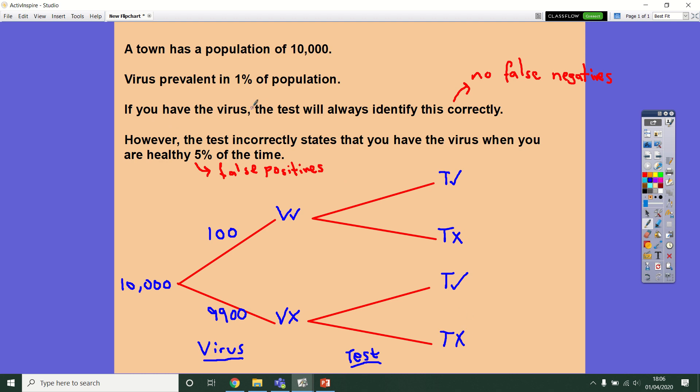So if you have the virus, the test is always going to get the outcome right. So if you've got the virus, 100 people, they'll all be told that they have the virus, leaving none for the false negative.